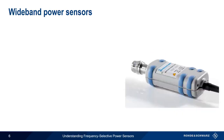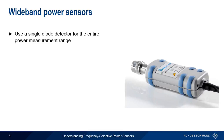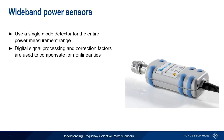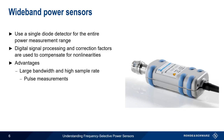Unlike multipath diode sensors, a wideband power sensor uses only a single diode over the entire measurement range. Using only a single diode does create the potential for non-linearities, so digital signal processing and correction factors are used to compensate for these effects. The main advantage of a wideband power sensor is that the wider bandwidth and higher sample rate enable the measurement of pulse signals. They also have very good dynamic range and accuracy.